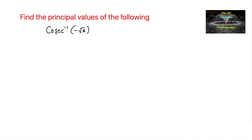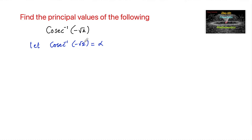Find the principal value of cosecant inverse of negative root 2. Let us consider cosecant inverse of negative root 2 is equal to alpha. Here alpha must belong to minus pi by 2 to plus pi by 2, and alpha should not be equal to 0.